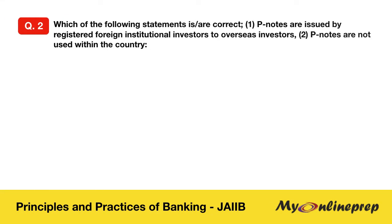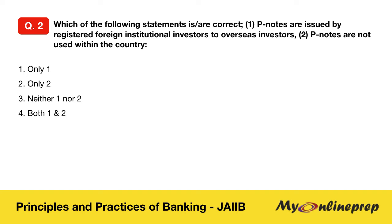Question 2: Which of the following statements is/are correct? Option 1: P-notes are issued by registered foreign institutional investors to overseas investors. Option 2: P-notes are not used within the country. Your answers can be: only one, only two, neither one nor two, or option 4: both one and two.